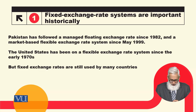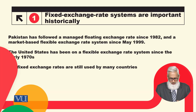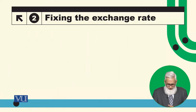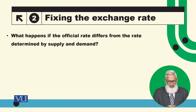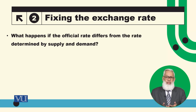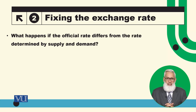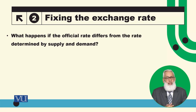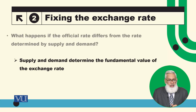We can still see the fixed exchange rate system in some countries today. First of all, what happens if the official rate differs from the rate determined by supply and demand? In the fixed exchange rate system, the fixed rate is different from the rate determined by demand and supply forces. The rate determined by demand and supply forces is the fundamental value of the exchange rate.